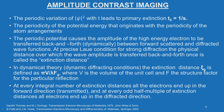The periodic potential causes the amplitude of the high-energy electron to be transferred back and forth dynamically between the forward-scattered and diffracted wave functions. At the precise Laue condition for a strong diffraction, the physical distance over which the wave amplitude is transferred back and forth once is called the extinction distance.